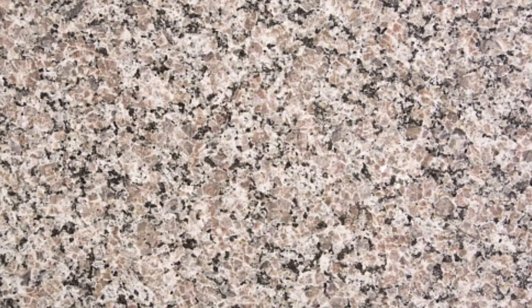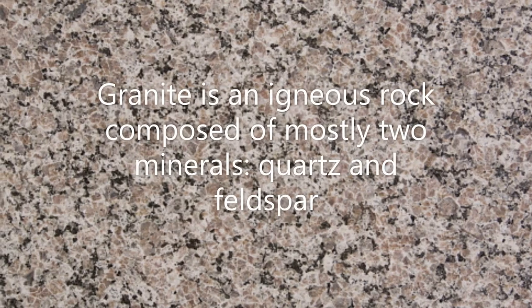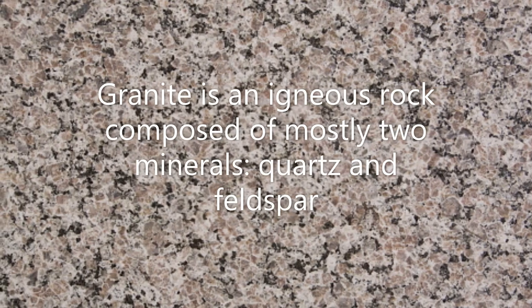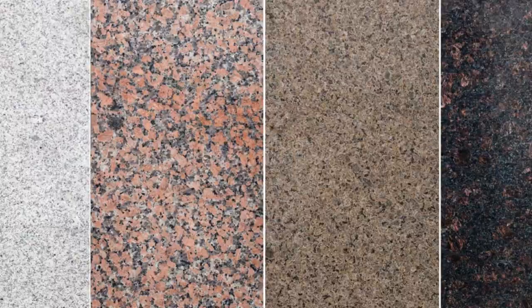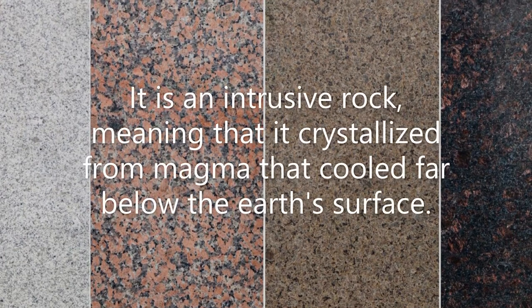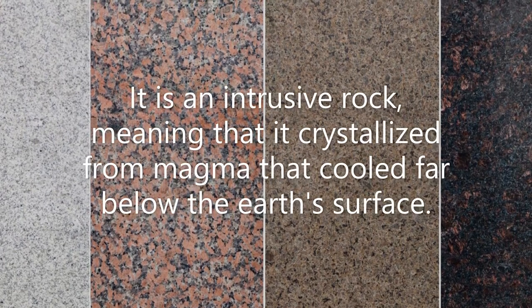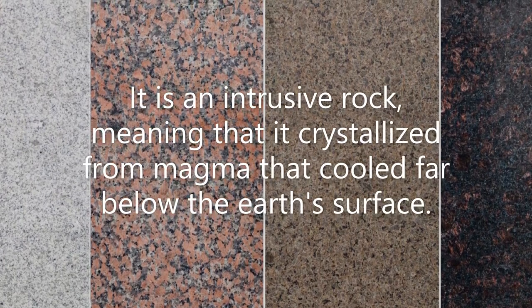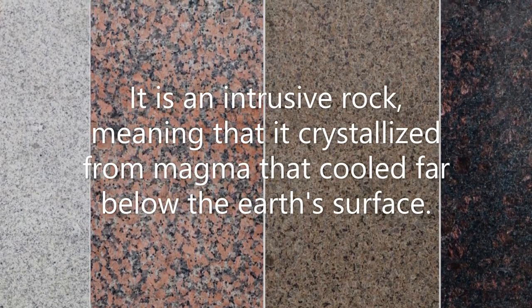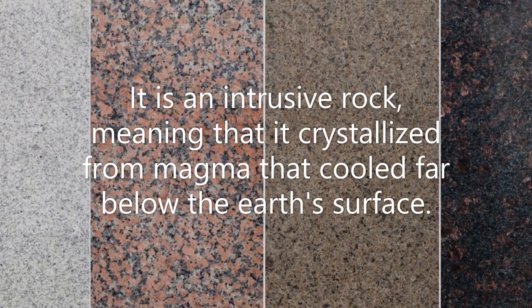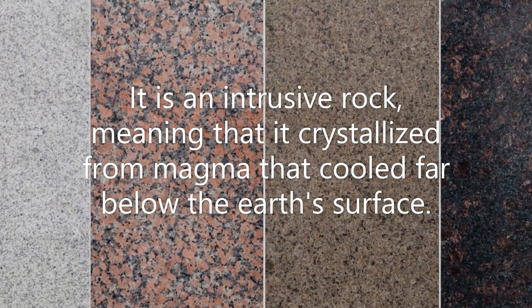Now we are talking about granite. Granite is an igneous rock composed of mostly two minerals: quartz and feldspar. It is an intrusive rock, meaning that it crystallized from magma that cooled far below the earth's surface.